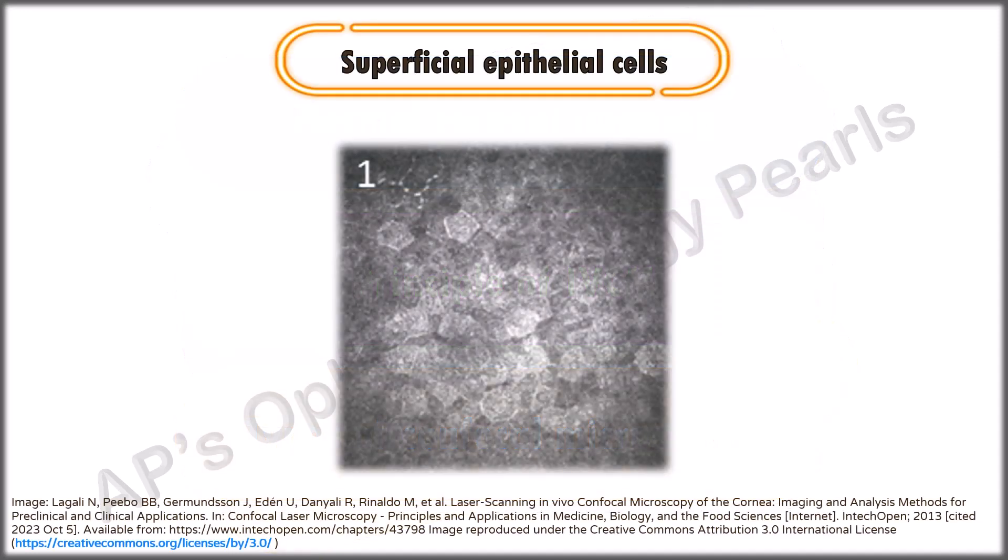The corneal epithelium is composed of superficial epithelial cells, wing cells and basal epithelial cells. The superficial epithelial cells lie on the surface of the cornea and appear polygonal in shape with a bright central nucleus surrounded by a dark halo.